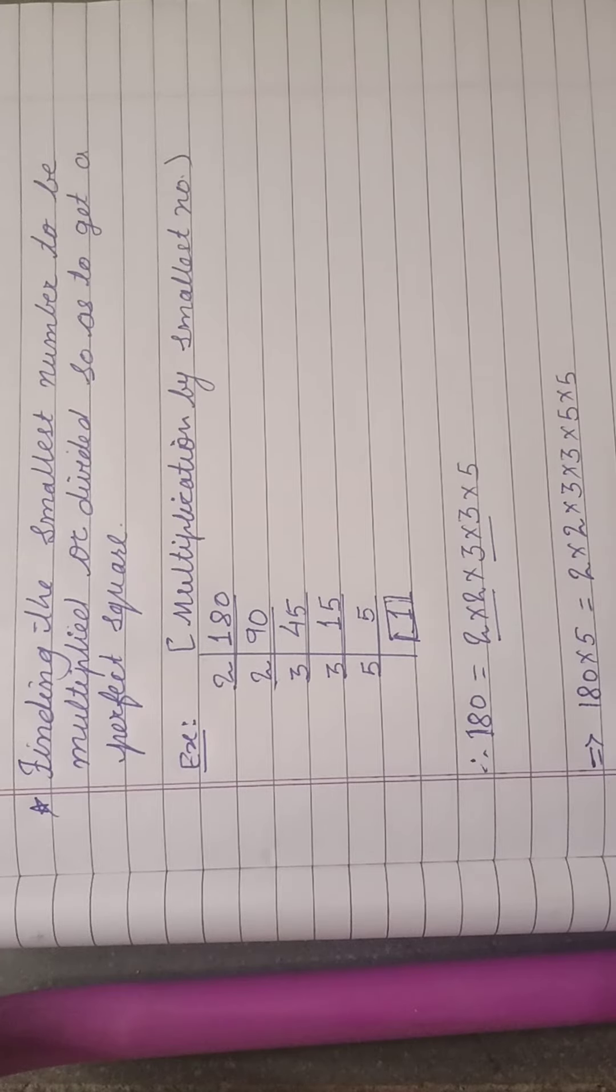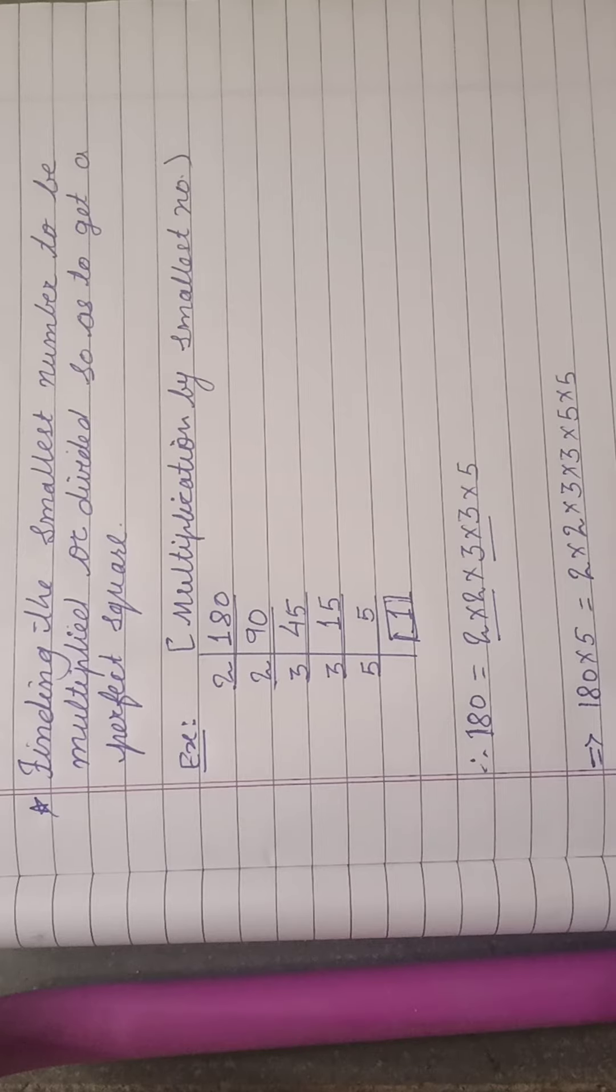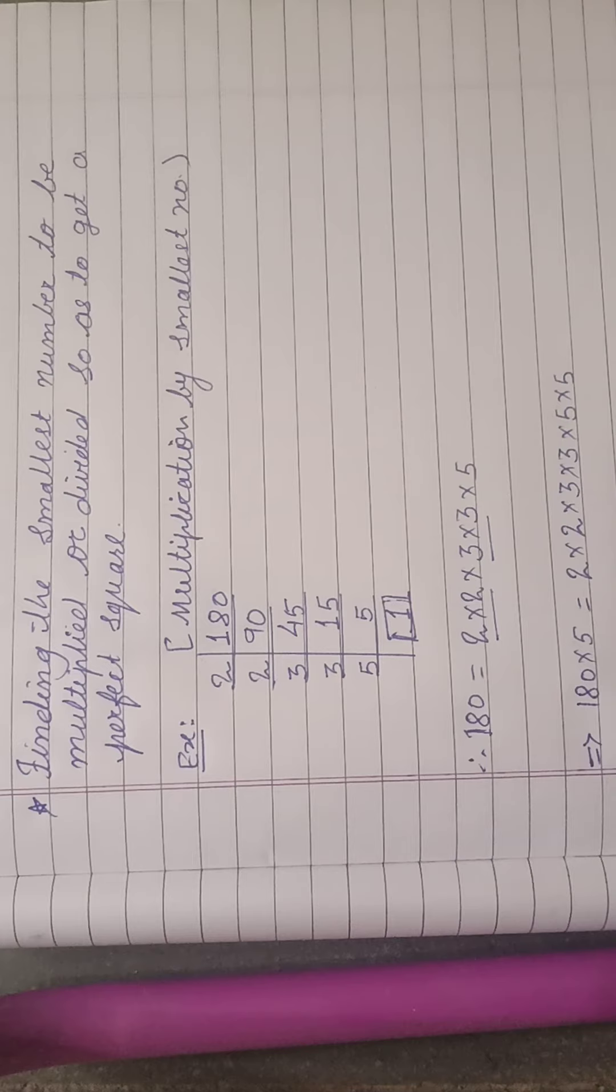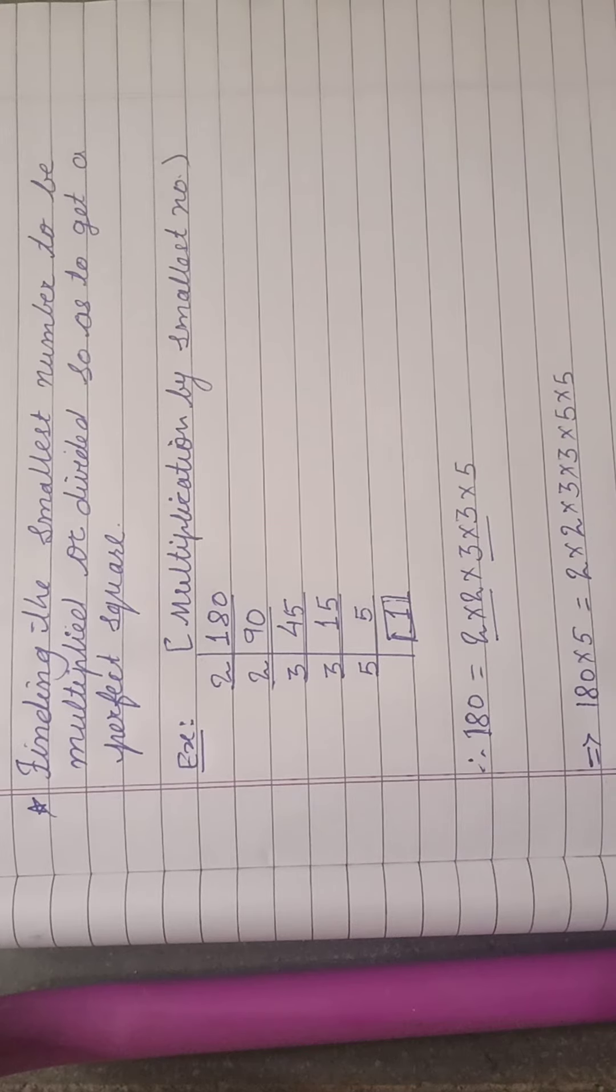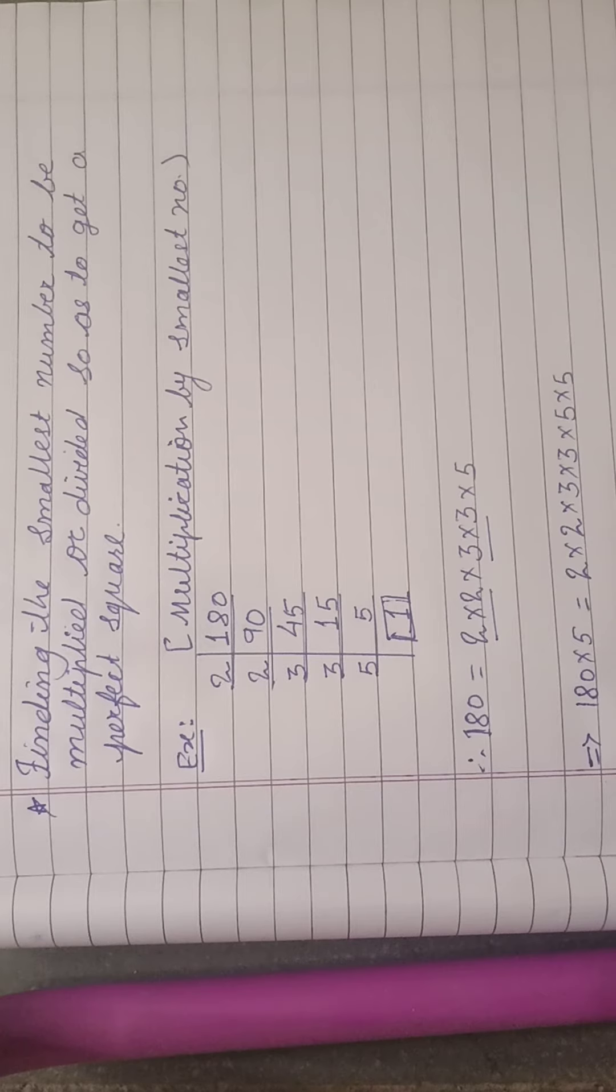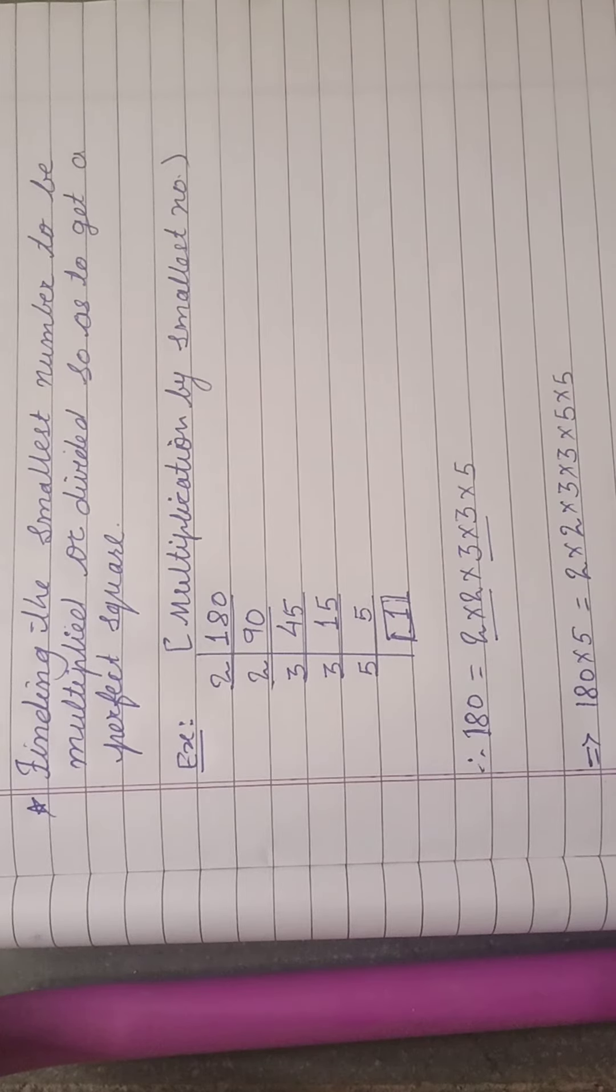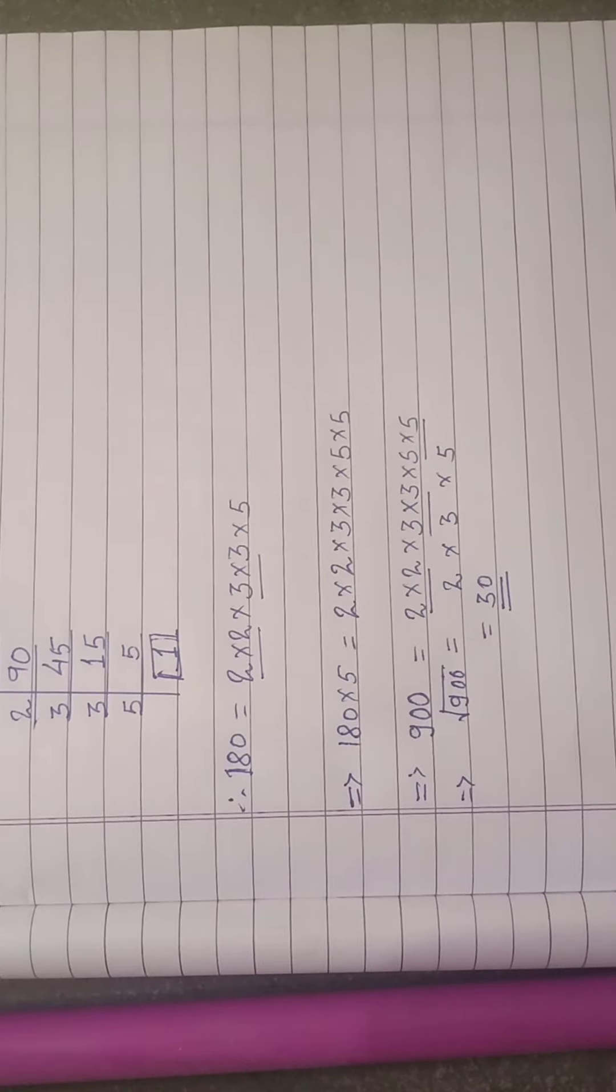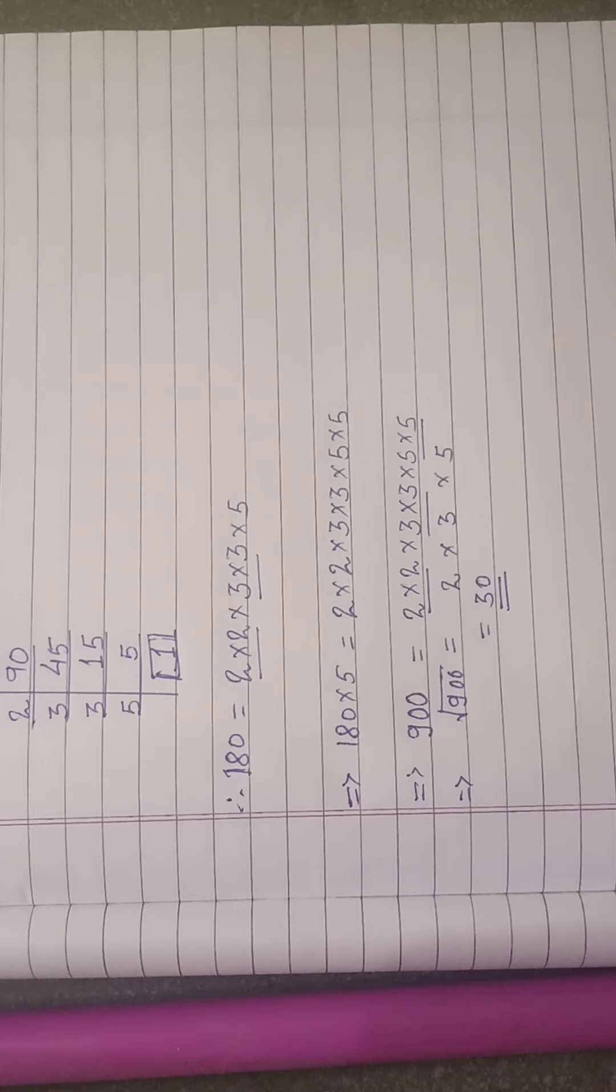Now you can see here 5 is not paired. So if we are having 5 also in pair, the number will be a perfect square number. So here in the next step I have multiplied by 5 to both the sides.